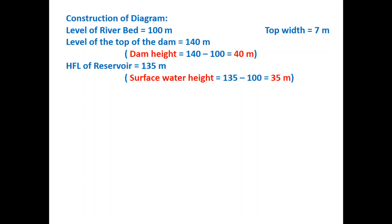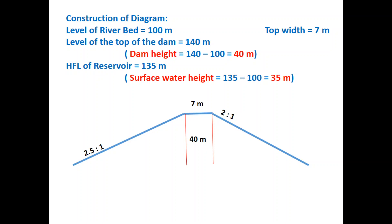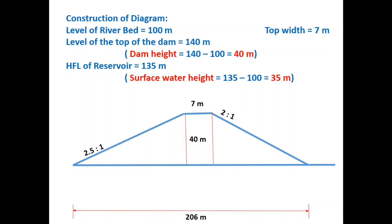Top width is 7 m. To construct the figure, first consider the top width as 7 m, then construct the upstream slope and the downstream slope. To find out the bed, draw the height of 40 m and construct the line from top to bottom, where you get the bottom width. The bottom width can be measured as 206 m. Then find out the alpha angle accordingly.